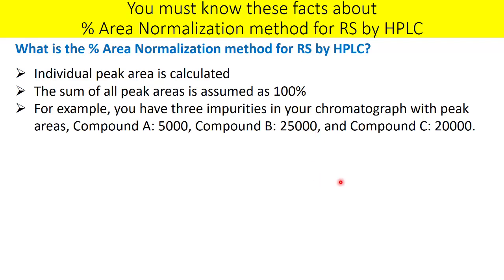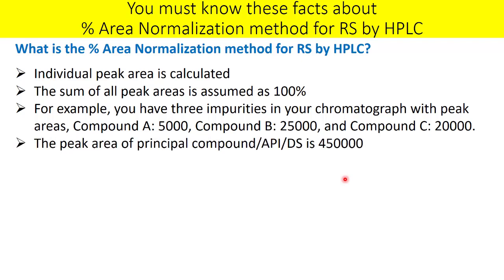For example, you have three impurities in your chromatogram: compound A has a peak area of 5000, compound B has 25000, and compound C has 20000. These are the three impurities present in your sample. Assuming the peak area for the principal compound or API is 450000, all four peaks together have a total area of 500000.